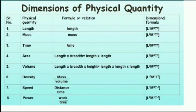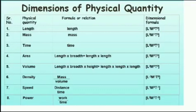Volume: formula is length into breadth into height, written as length into length into length. Dimensional formula is [L³, M⁰, T⁰]. Density: formula is mass divided by volume, dimensional formula is [L⁻³, M¹, T⁰]. Speed: formula is distance divided by time, dimensional formula is [L¹, M⁰, T⁻¹]. Power: dimensional formula is [L², M¹, T⁻³].